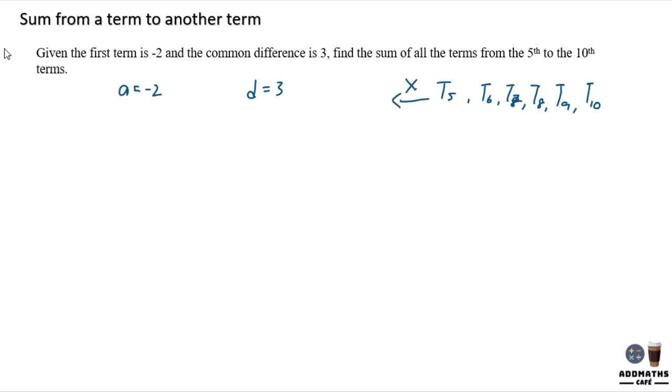So what you do is by using S10 minus S4. Why S4? S4 is because it is from T1 plus to T4, and S10 will be from T1 plus to T10. So you use S10 minus S4. It will give you T5 plus to T10.